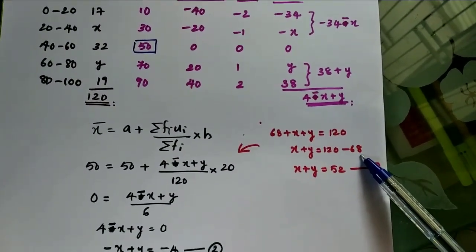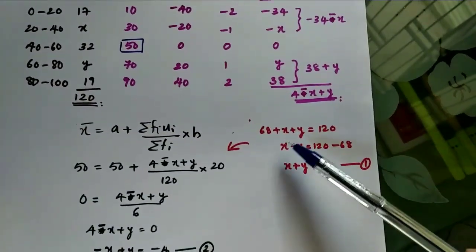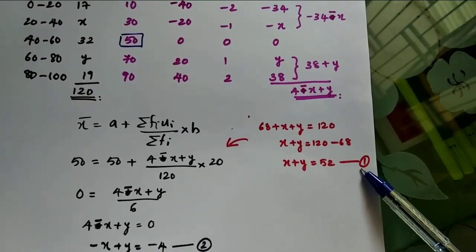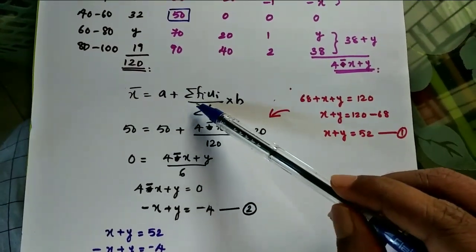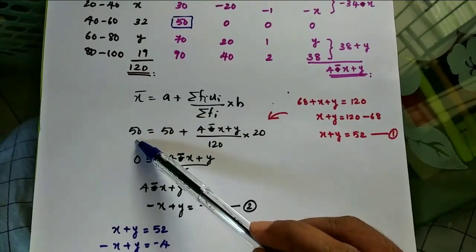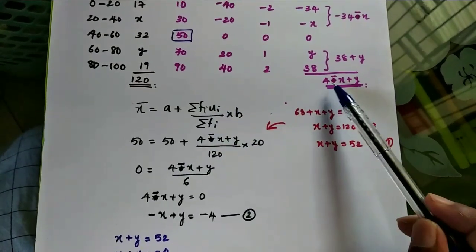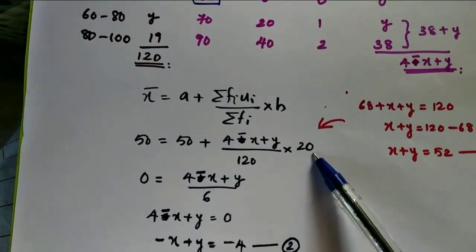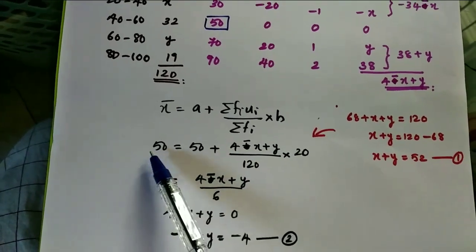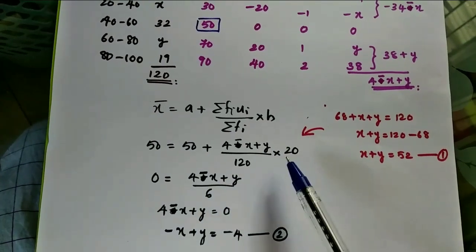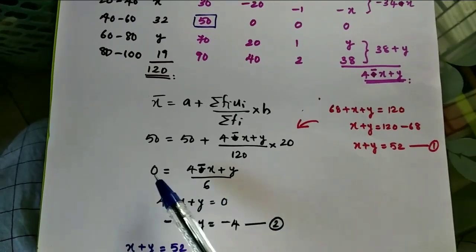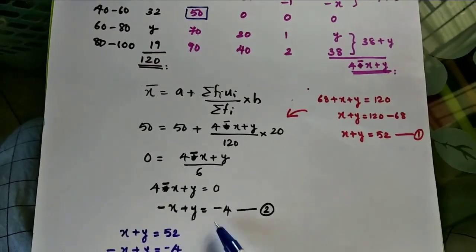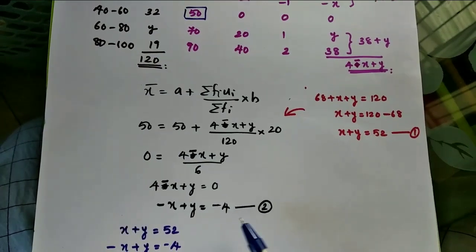Applying the step deviation method: x-bar equals a plus sigma(fi·ui) divided by sigma(f), into h. Here x-bar is 50, assumed mean a is 50, sigma(fi·ui) is 4 minus x plus y, sigma(f) is 120, and class size h is 20. Transposing 50 to the left: 50 minus 50 equals 0. So 0 equals (4 minus x plus y) divided by 120, into 20. Simplifying: 4 minus x plus y equals 0, giving minus x plus y equals minus 4. This is equation number 2.